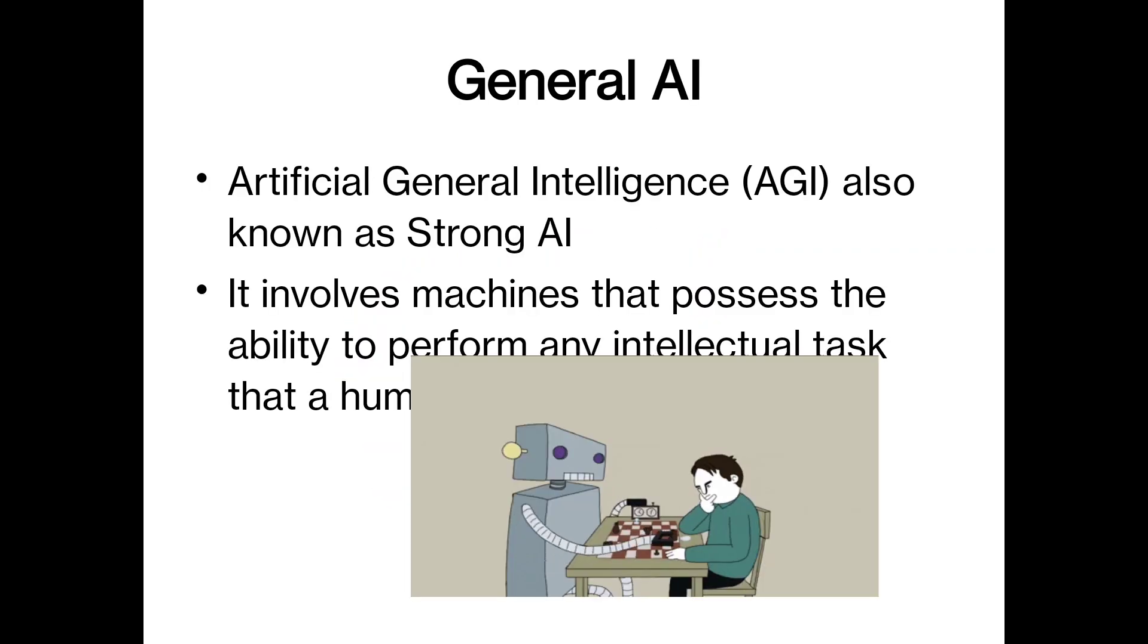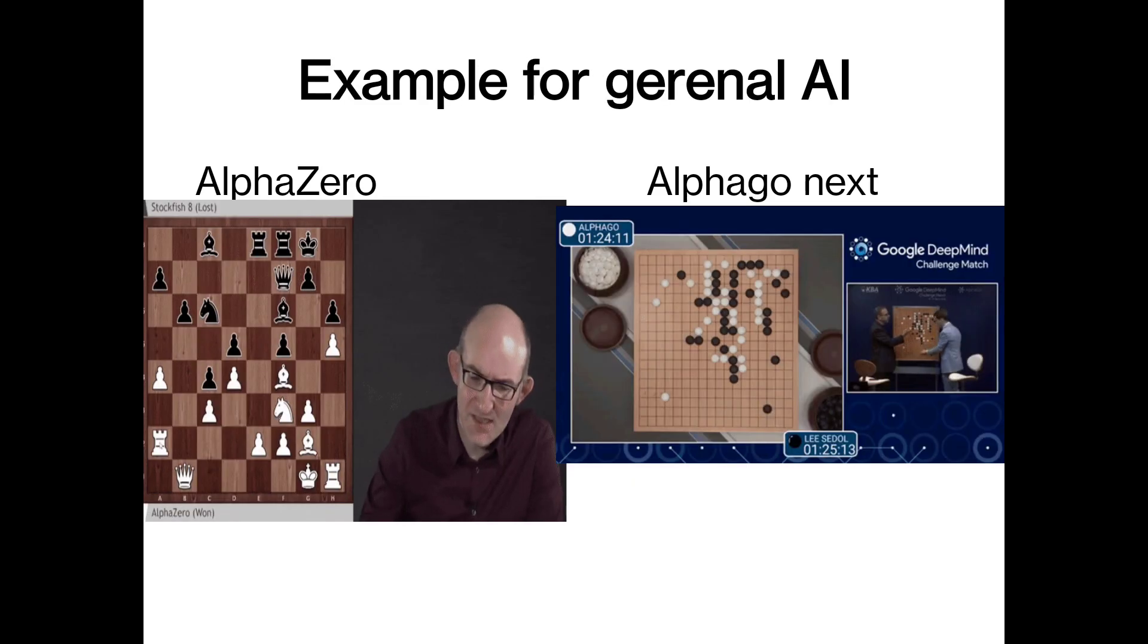The next type is general artificial intelligence. It is also called strong artificial intelligence. It involves machines that possess ability to perform any intellectual task that human can do. Examples of general AI are AlphaZero and AlphaGo.